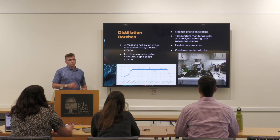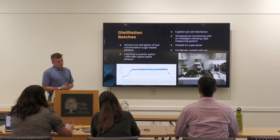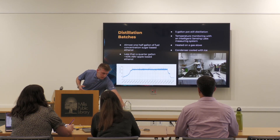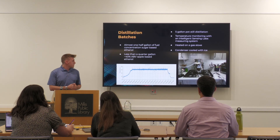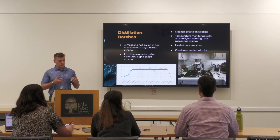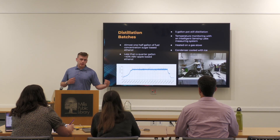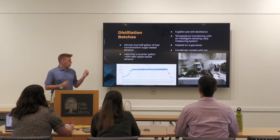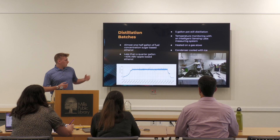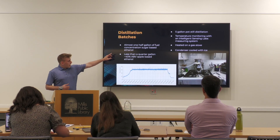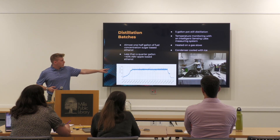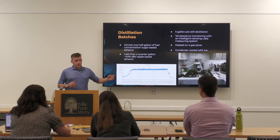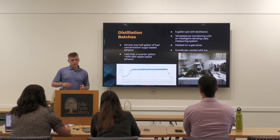I used Lavalin EC1118 wine yeast, which allows fermentation up to around 20% alcohol by volume. I did two distillation batches, one for each fermentation batch. My sugar-based ethanol produced almost a half gallon of fuel at around 85 to 95% alcohol by volume — fuel concentration, which I used to run my engine. The apple-based ethanol produced less than a quarter gallon at about 40% alcohol by volume. I distilled in a five-gallon pot still, with temperature monitoring from a system I built myself, heated on a gas stove and cooled with ice in the condenser.